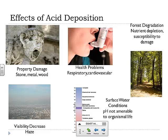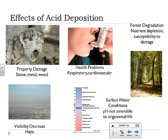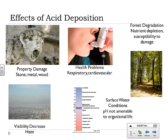There are several effects that we're not too happy with. The first one is property damage — stone, metal, and wood. There are health problems, visibility decrease, forest degradation, and changes in surface water conditions. We're going to go through each one of these individually.